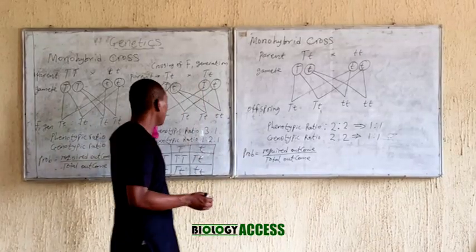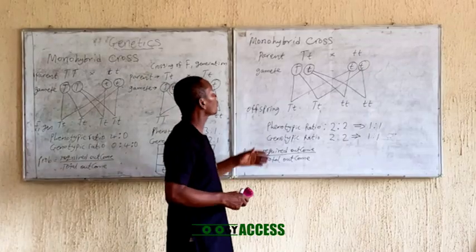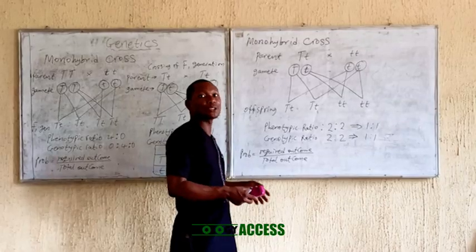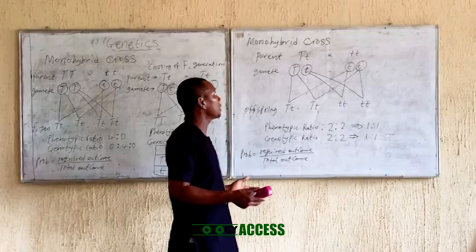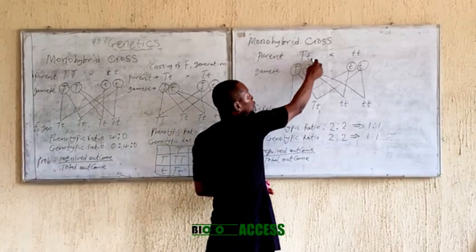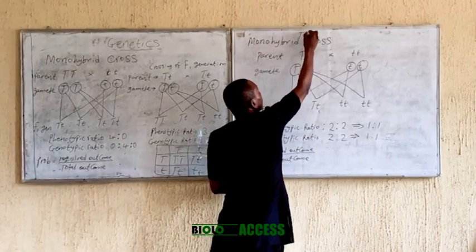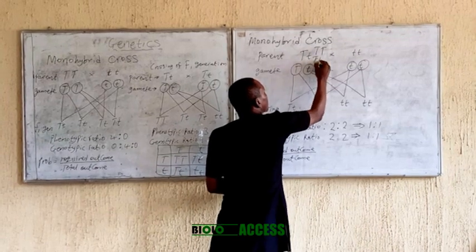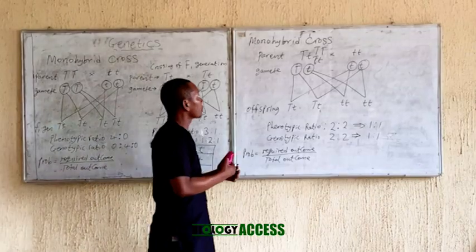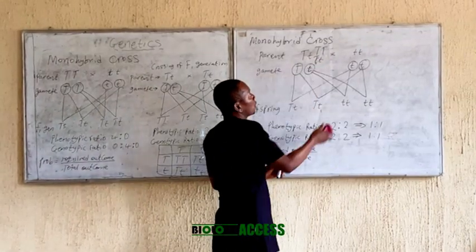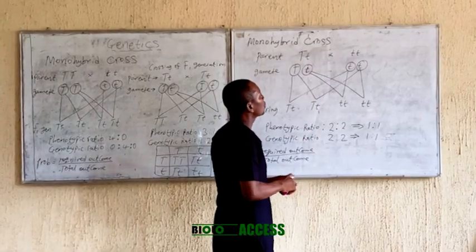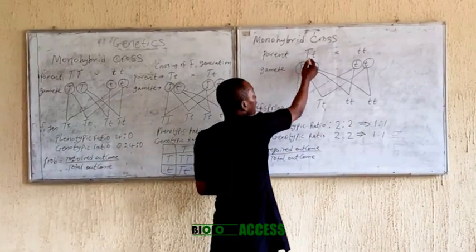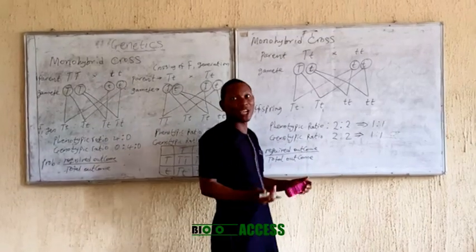Now you can try another example of a monohybrid cross: when you cross a recessive pea plant with an unknown dominant individual. You will not know for sure whether the dominant individual is homozygous dominant or heterozygous. So when you cross this recessive individual with this unknown dominant, you are carrying out a testcross — you want to test whether this parent is actually homozygous or heterozygous for that trait.